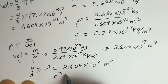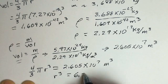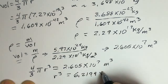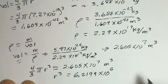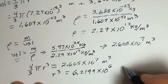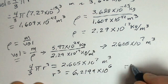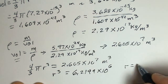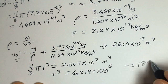And for r cubed, you should come up 6.2199, 10 to the 6th. Again, cubic meters. And now take a cube root of that. And you come up with 184 meters.